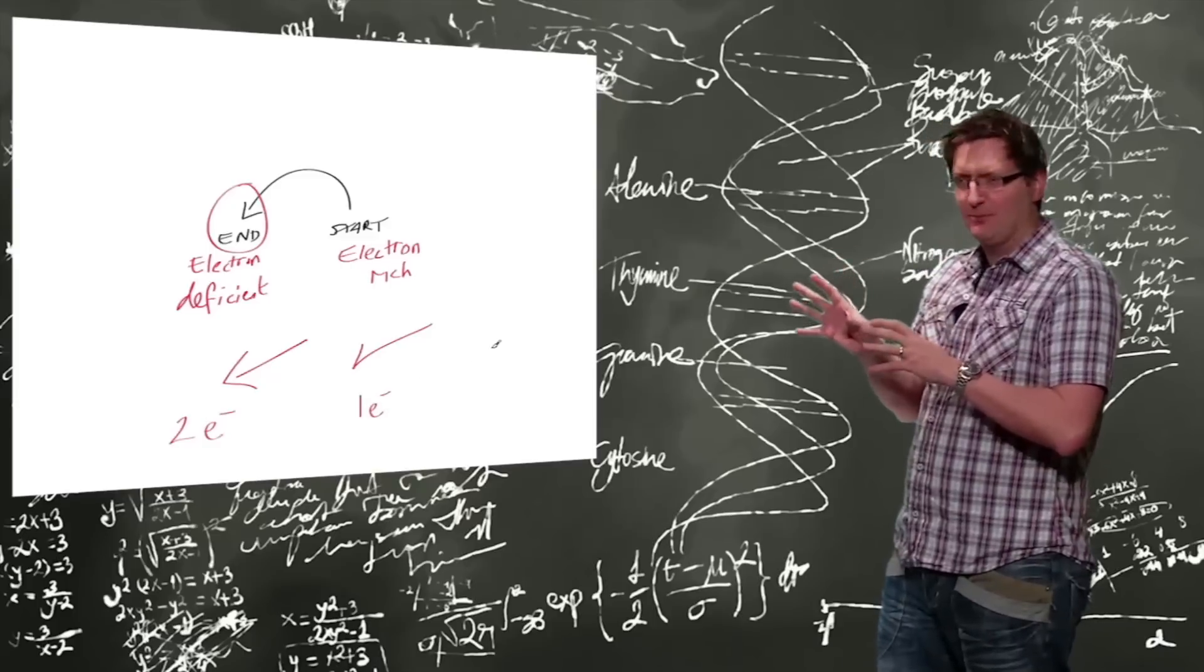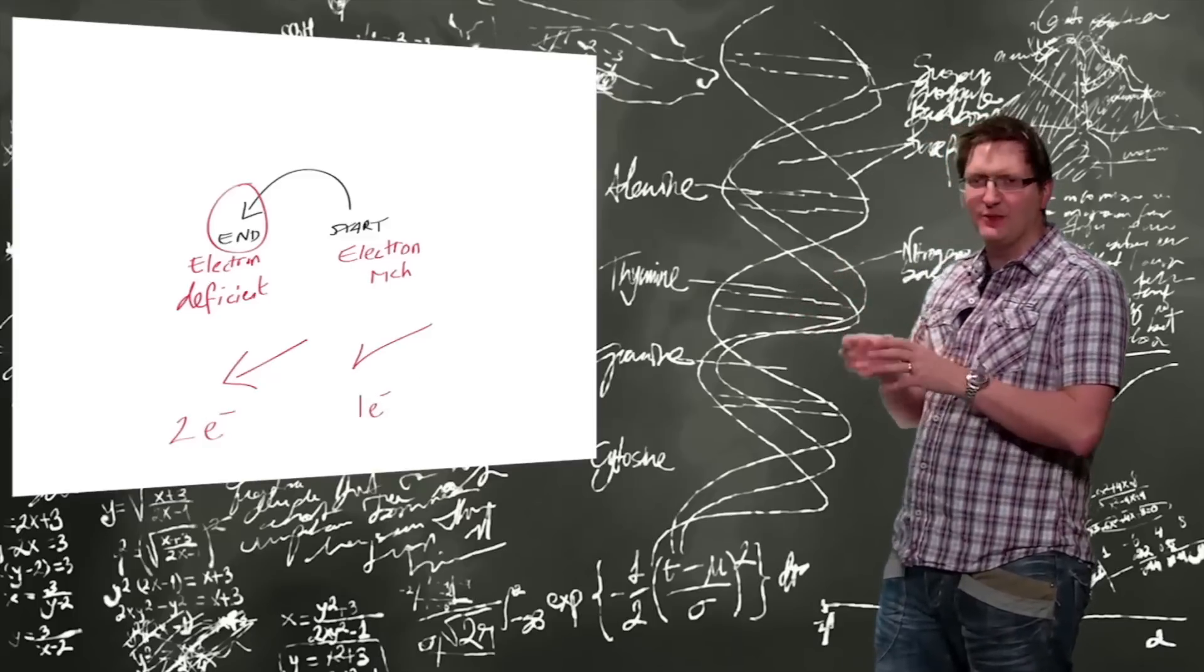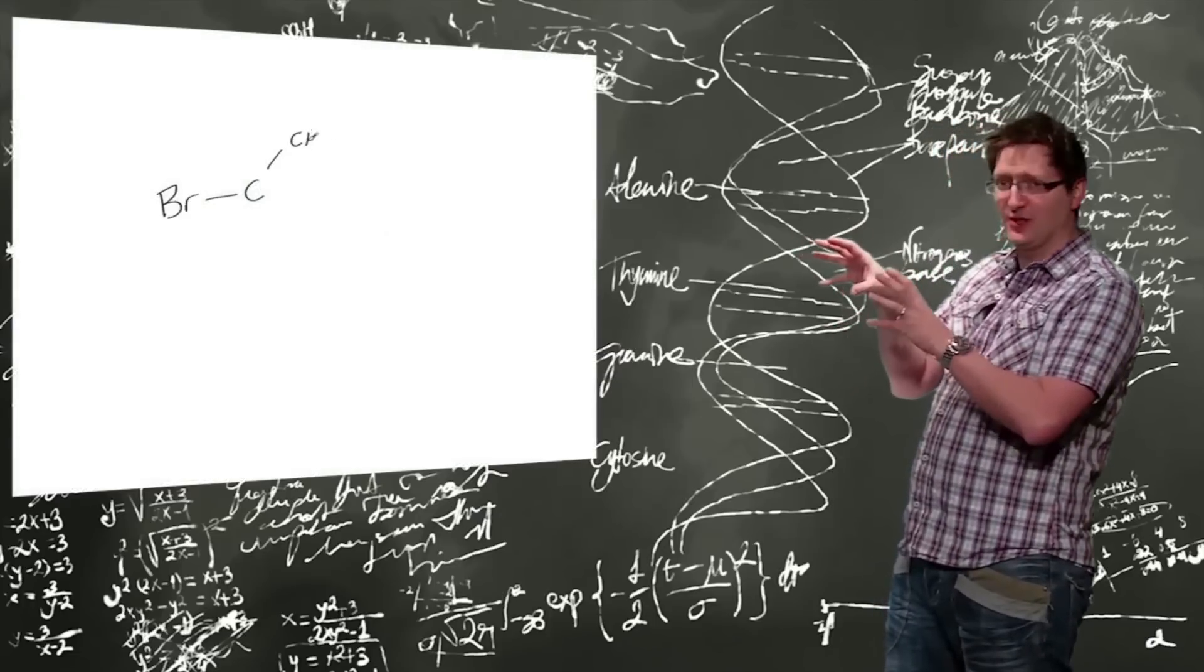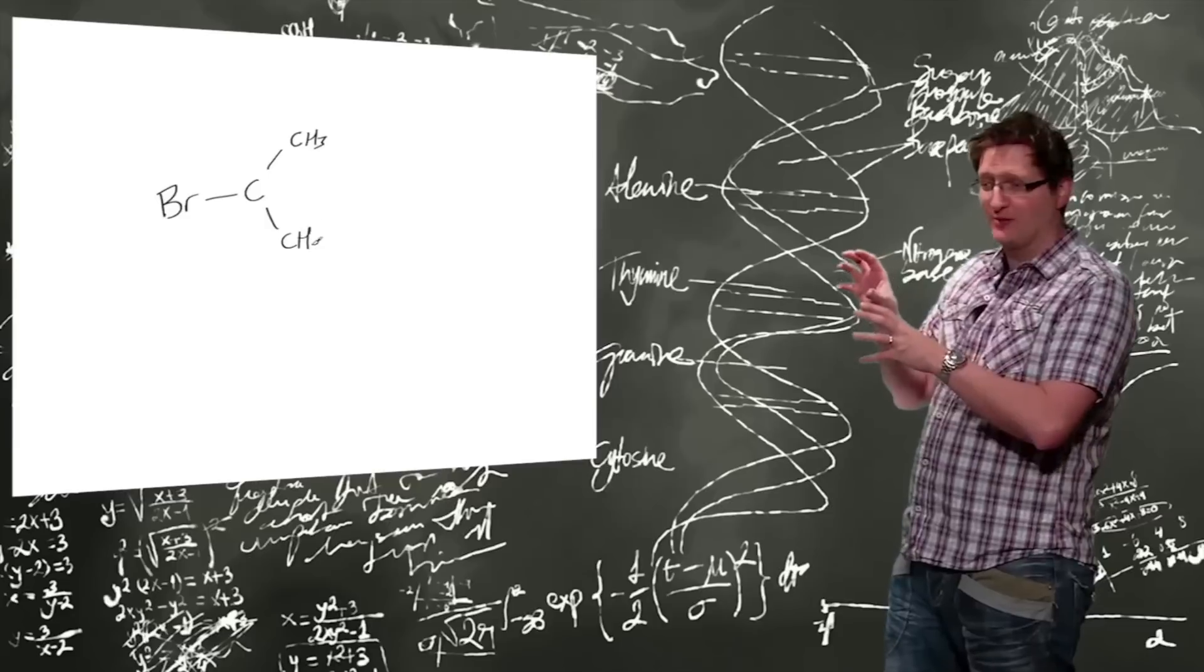So let's have a look at an example. If we're looking at this example here, we've got methanol attacking an isobutane, bromo-isobutane here.